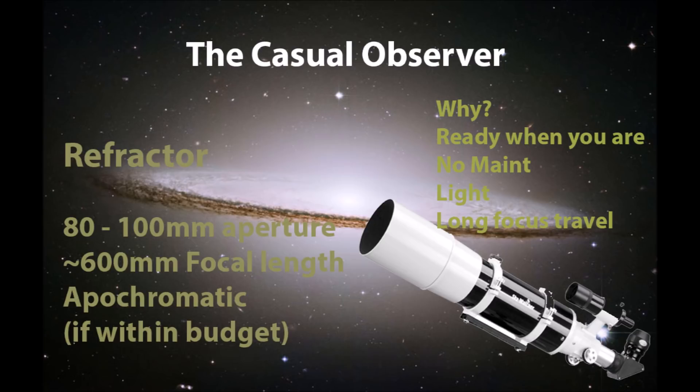Now, why would you get one of these? It's ready to go when you are. It's light. No maintenance. Also, the focuser has a lot of travel. And this is particularly important when you're trying to put in magnification lenses. Things like Barlows or Powermates. They tend to change the focal position, and some telescopes will require special adapters and spacers for this. But a refractor is generally fine with the standard equipment.